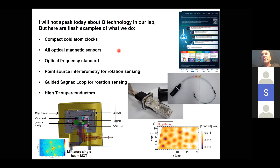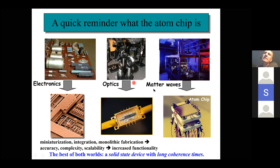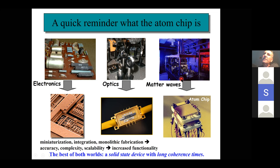The vision behind the atom chip is to imitate previous revolutions. About 40-50 years ago we moved from electronic boards to integrated chips; maybe 20 years ago we moved from tabletop optical experiments to photonic chips. This kind of cold matter wave experiment — like the clock at NIST where you have a room full of lasers, vacuum, and electronics — the vision 20 years ago, starting in three groups at Harvard, Innsbruck, and Garching, was to bring all of that and put it onto a chip.